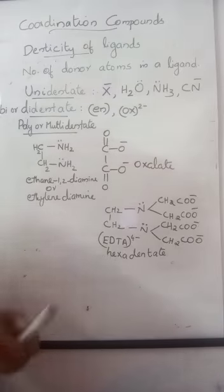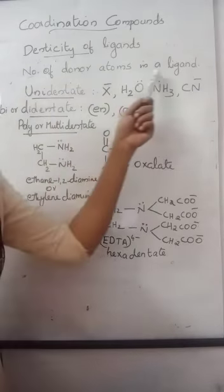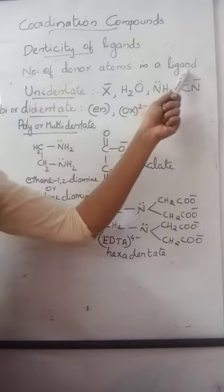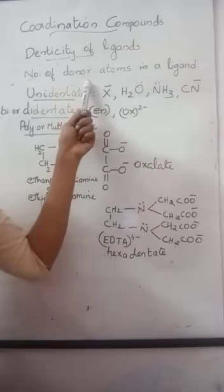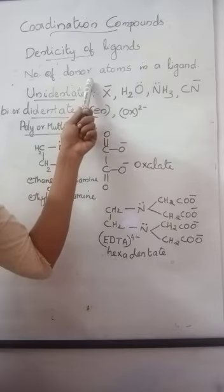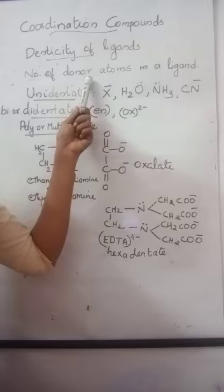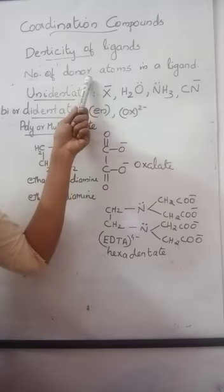Denticity of ligands. Denticity is the number of donor atoms present in a ligand. The ligand is bonded to the central metal atom through this donor atom. That number of donor sites through which the ligand bonds to the central metal atom is called its denticity.